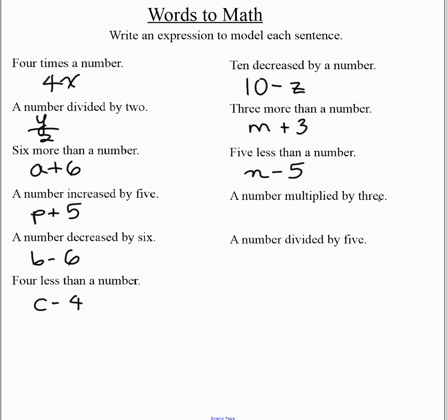A number multiplied by three, that's the same as saying three times a number. We'll write 3k, for example. And then a number divided by five, so let's say the number is h, to show divided by five, we do that.